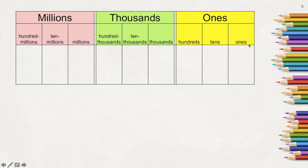Starting off with the smallest place value is ones, tens, hundreds, followed by thousands, ten thousands, hundred thousands, millions, ten millions, and hundred millions.